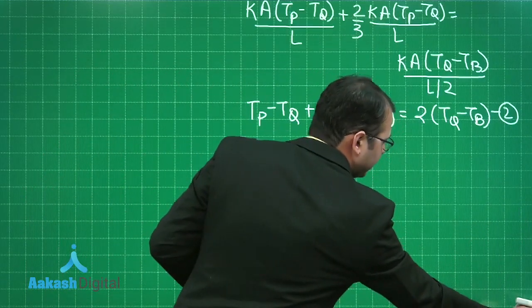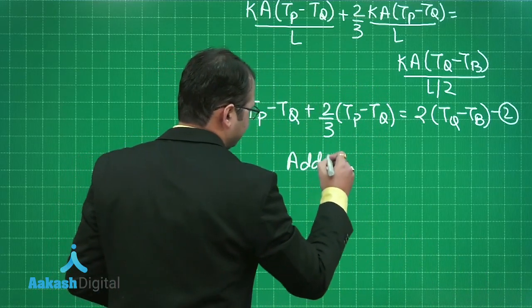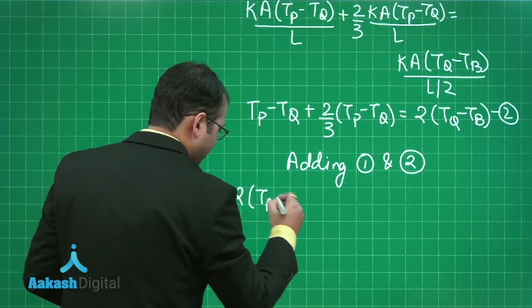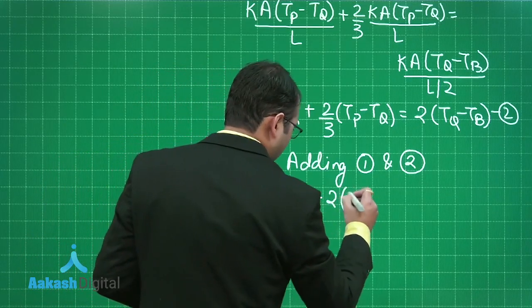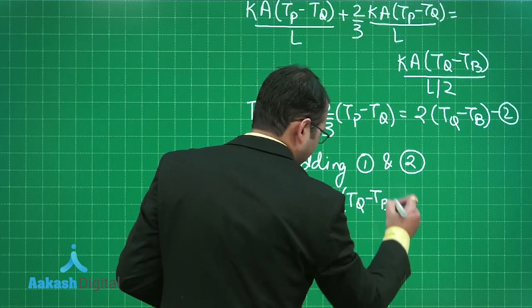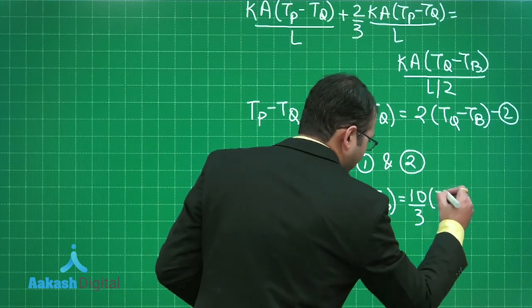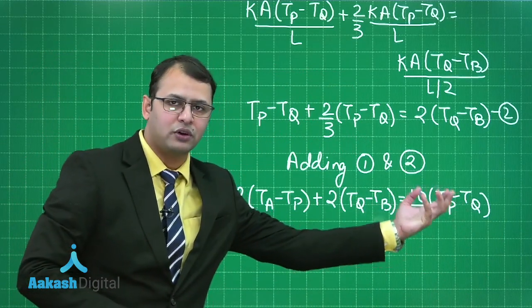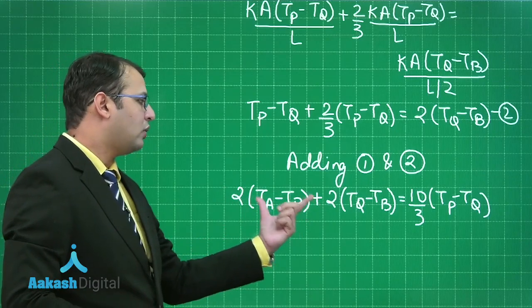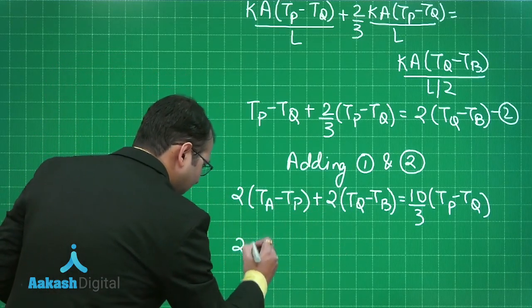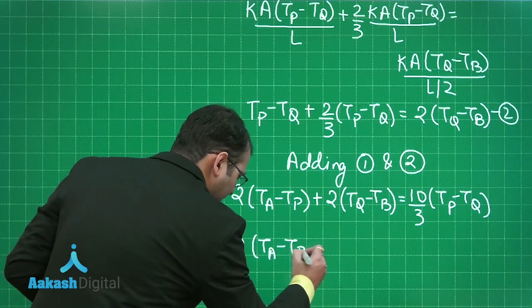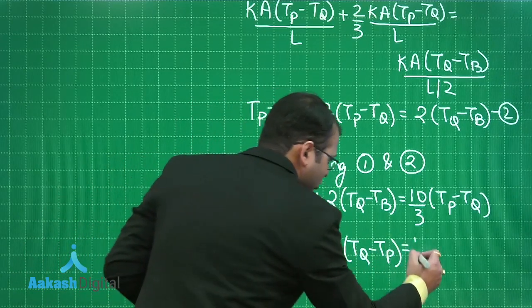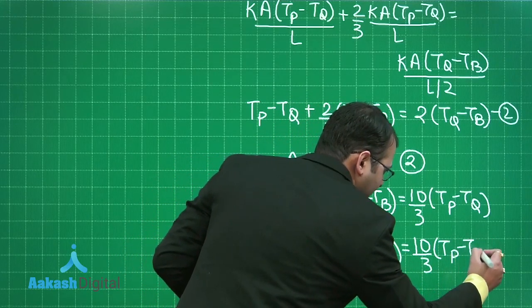So let's add the two equations, 1 and 2, what we'll get? Adding 1 and 2, you will get twice of (TA minus TP) plus twice of (TQ minus TB), that should be equal to 10 by 3 of (TP minus TQ). So nearly I have found that (TP minus TQ) which I have to find the value of is on one side. Now this value, how I can find it? Let's see. If I rephrase this, I can write it as (TA minus TB) plus twice of (TQ minus TP), that is equals to 10 by 3 (TP minus TQ).